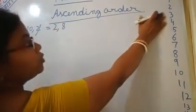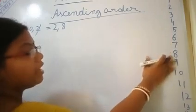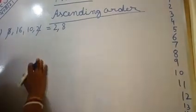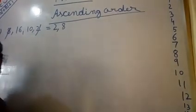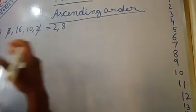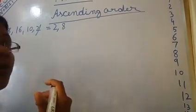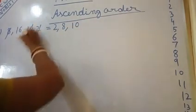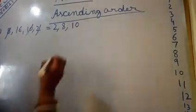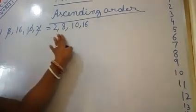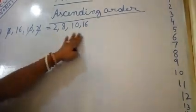After 2, count 3, 4, 5, 6, 7, 8 — yes, 8 is there. It is also smaller number to bigger number, forward counting, and it is ascending order. Then, between 10 and 16: after 8, count 9, 10 — so 10 comes next. After 10, cut it. Only 16 is left, so 16 is the biggest. I have arranged these numbers in ascending order.